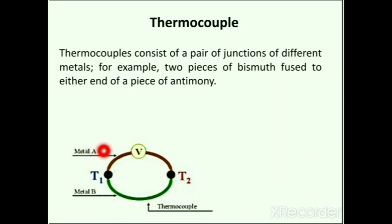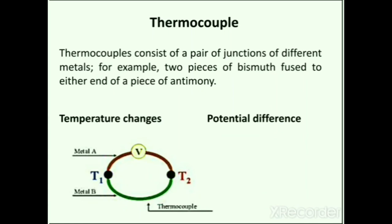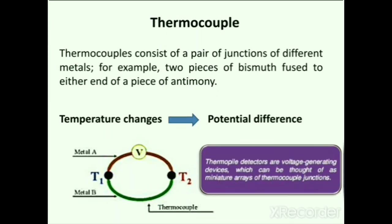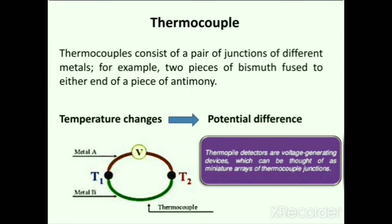Next is the thermocouple detector. A thermocouple consists of a pair of junctions of different metals — for example, two pieces of bismuth fused to either end of a piece of antimony. The sensing element composed of small thermocouples on a silicon chip absorbs the energy and produces an output signal. This detector works on the phenomenon that when a closed circuit is formed by joining two dissimilar metals at two junctions maintained at different temperatures, an electromotive force is induced in the closed circuit.